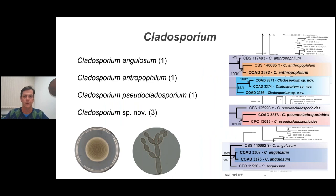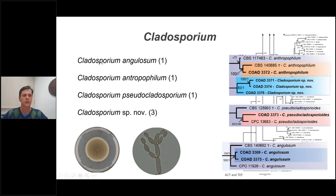Inside Cladosporium, we found four different species: Cladosporium angulare, Cladosporium anthropophilum, Cladosporium pseudocladosporium, and also a species of Cladosporium that is new to science, which we will be studying and describing.